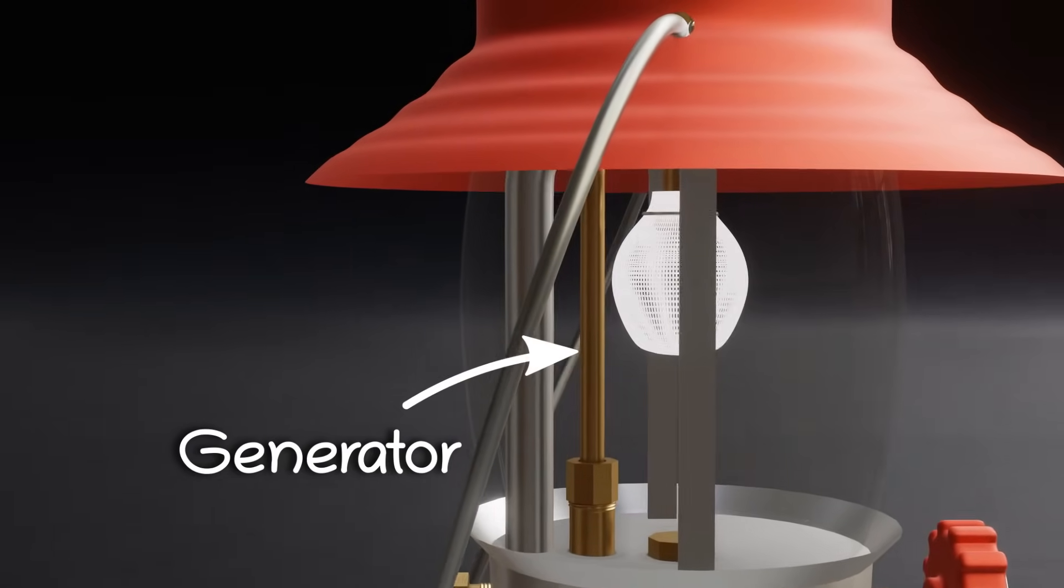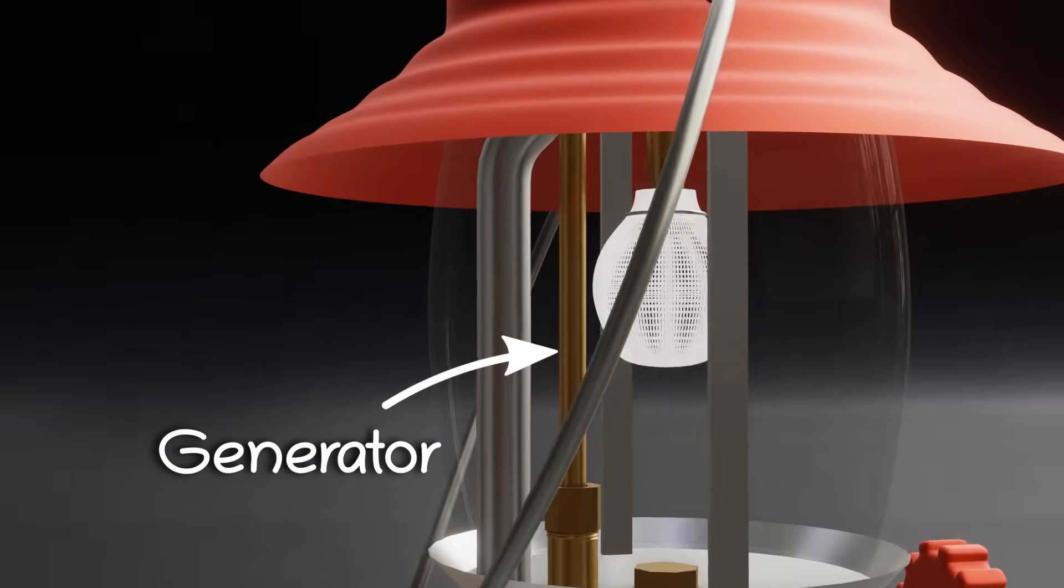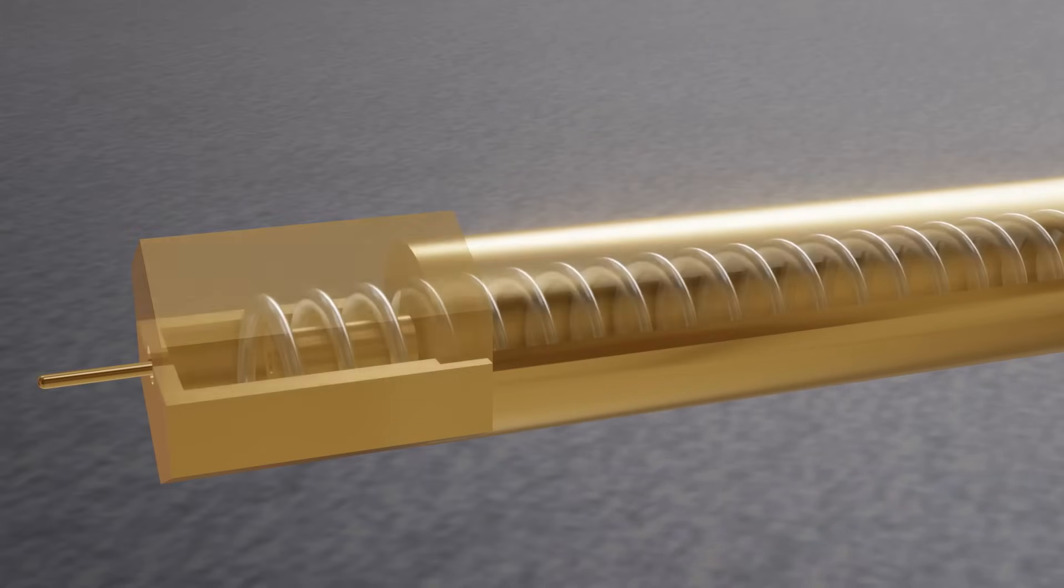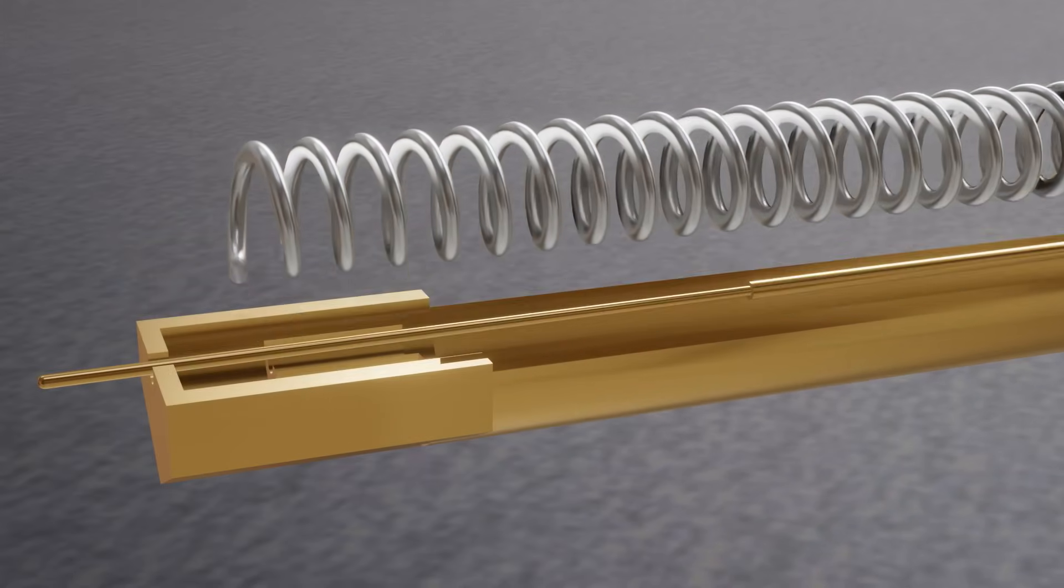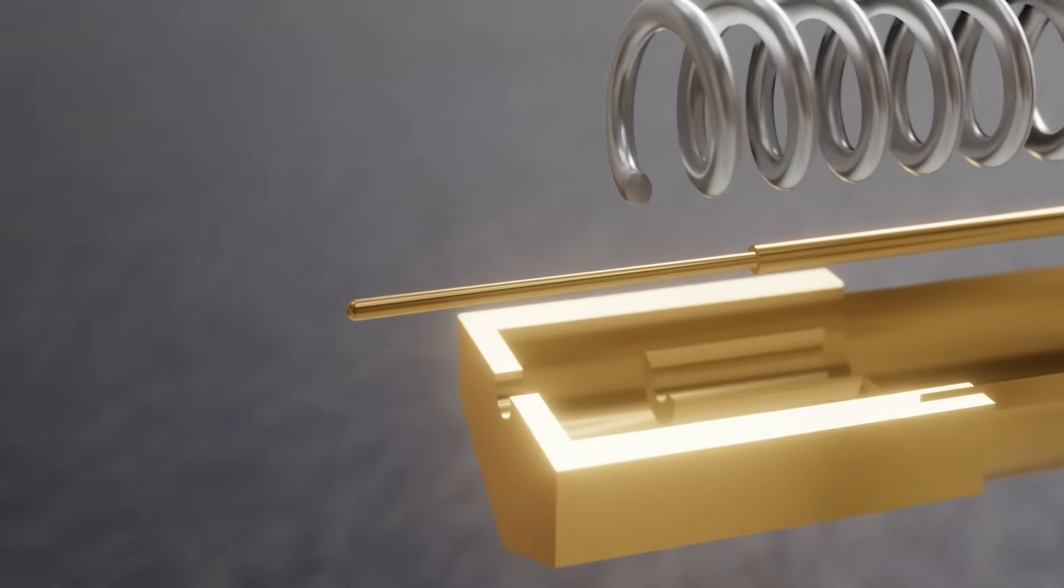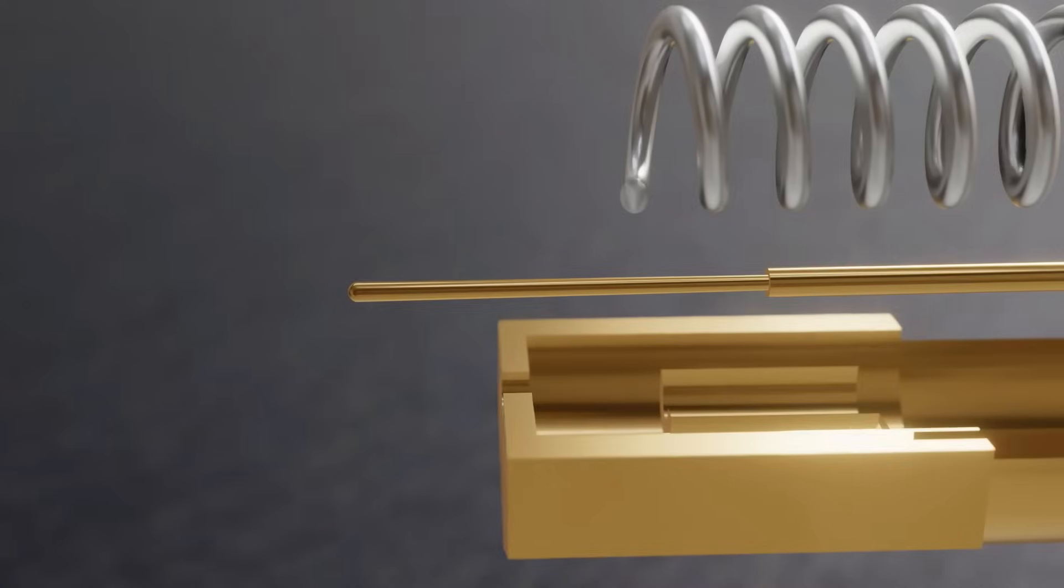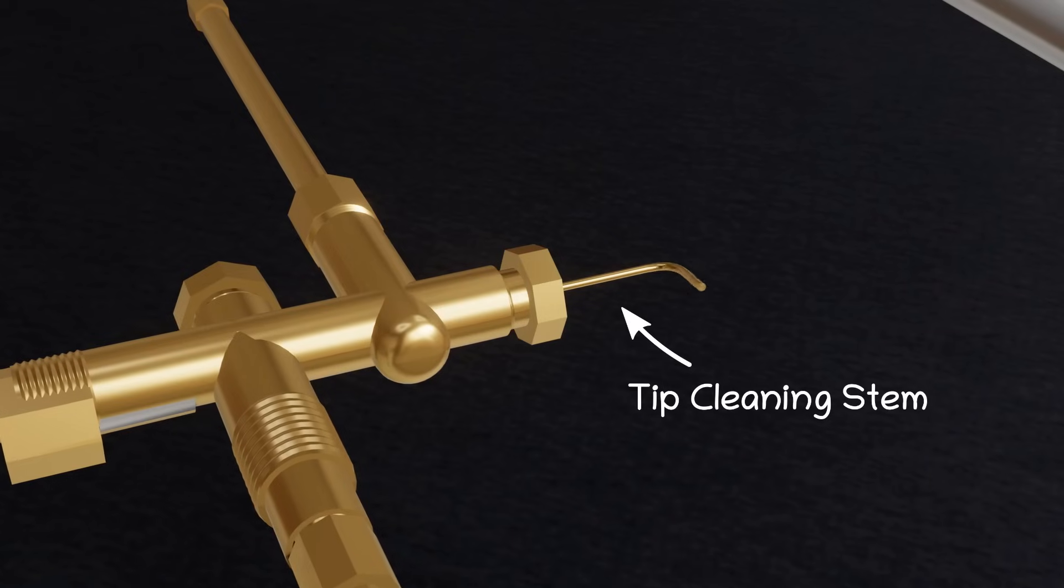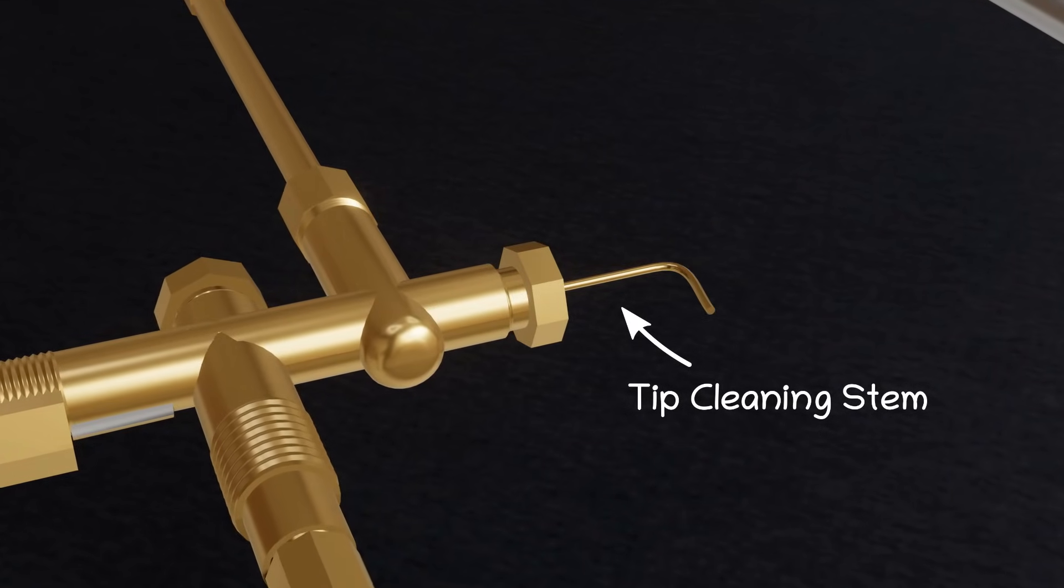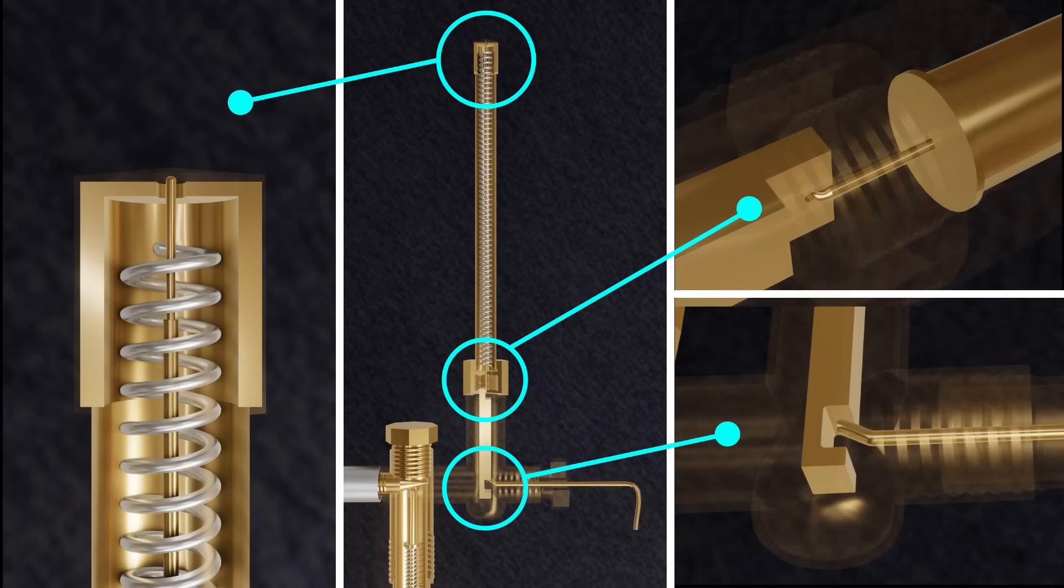The next fascinating component is the generator, which functions like the heart of the pressure lantern. The generator comprises a gas tip, a spring that acts as a filler, and a cleaning rod. The top end of the cleaning rod has a needle-like structure that cleans the gas tip when pushed upward. The position of the cleaning rod is controlled by the tip cleaning stem, which is connected to the valve body. The cleaning rod and the tip cleaning stem are linked through an eccentric block, allowing the rotation of the cleaning stem to clean the gas tip.